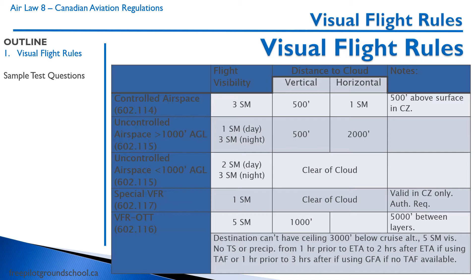In a control zone, additionally, you have to be 500 feet above the surface, so the minimum weather you can fly in is a ceiling of 1,000 feet — you're 500 feet above the ground and 500 feet below the cloud. In uncontrolled airspace above 1,000 feet, you need one statute mile visibility during the day or three statute miles at night, and you must be 500 feet vertically from cloud and 2,000 feet horizontally.